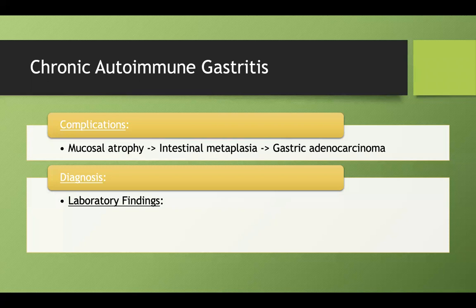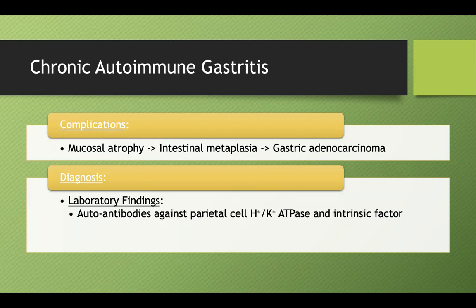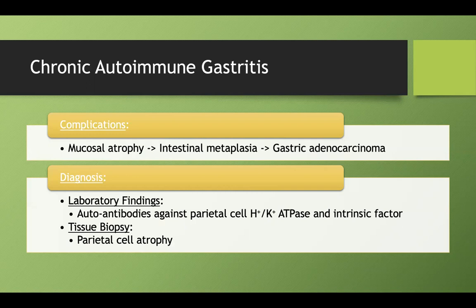How do we diagnose this? We can test the blood for different antibodies — specifically against the parietal cell H⁺/K⁺-ATPase, and there are also antibodies against intrinsic factor directly. If you do a tissue biopsy, you're going to find parietal cell atrophy, which makes total sense because the immune system is killing them all.